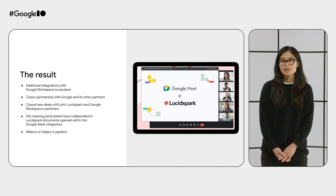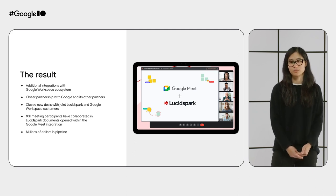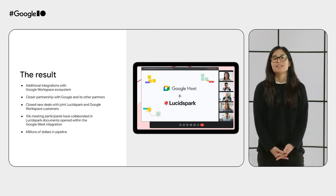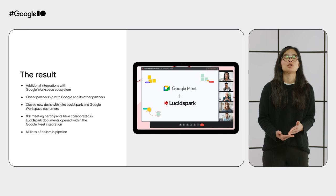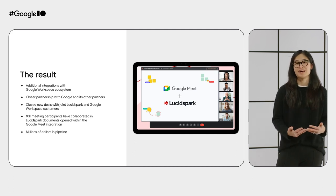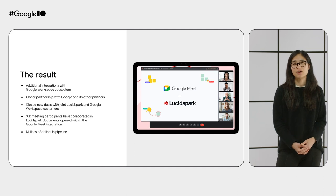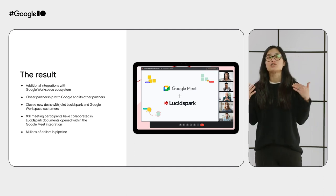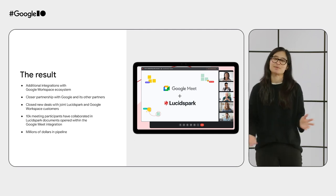The Lucid Spark add-on launched with Google Meet in September of last year. The Lucid Spark team realized the ease of building integrations with Google and decided to build an even closer partnership and expand integrations across Workspace Platform. The team has been able to close several new deals for both new and existing customers. At this point in time, over 10,000 meeting participants have collaborated on Lucid Spark inside a Meet call. All this growth is leading to a healthy, thriving business, a robust pipeline for even more growth, and delighted customers all around.